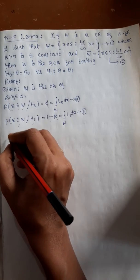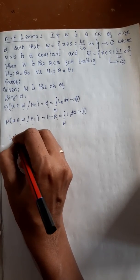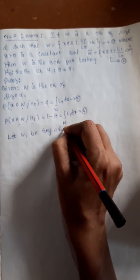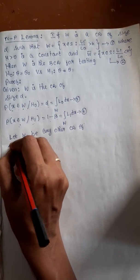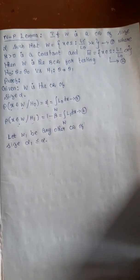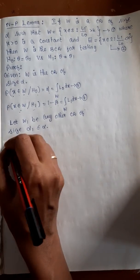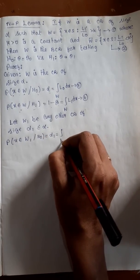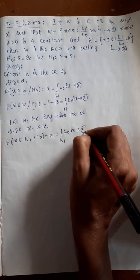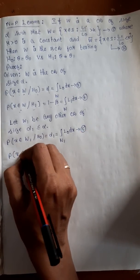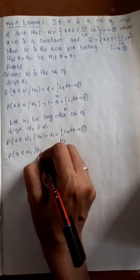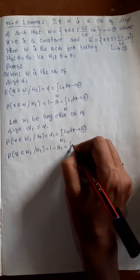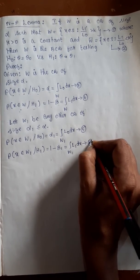To prove that w is the best critical region, I consider one other critical region. Let w1 be any other critical region of size alpha1, where alpha1 is less than or equal to alpha. The probability of x belonging to w1 under H0 is alpha1, written as integral over w1 of l0 dx — equation 5. The probability of x belonging to w1 when H1 is true is 1 minus beta1, written as integral over w1 of l1 dx — equation 6.